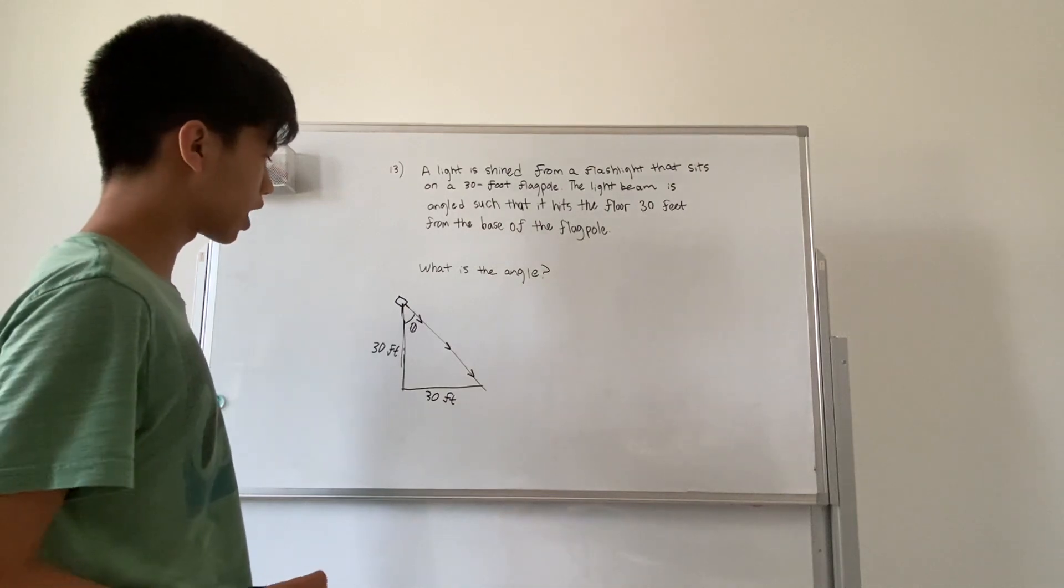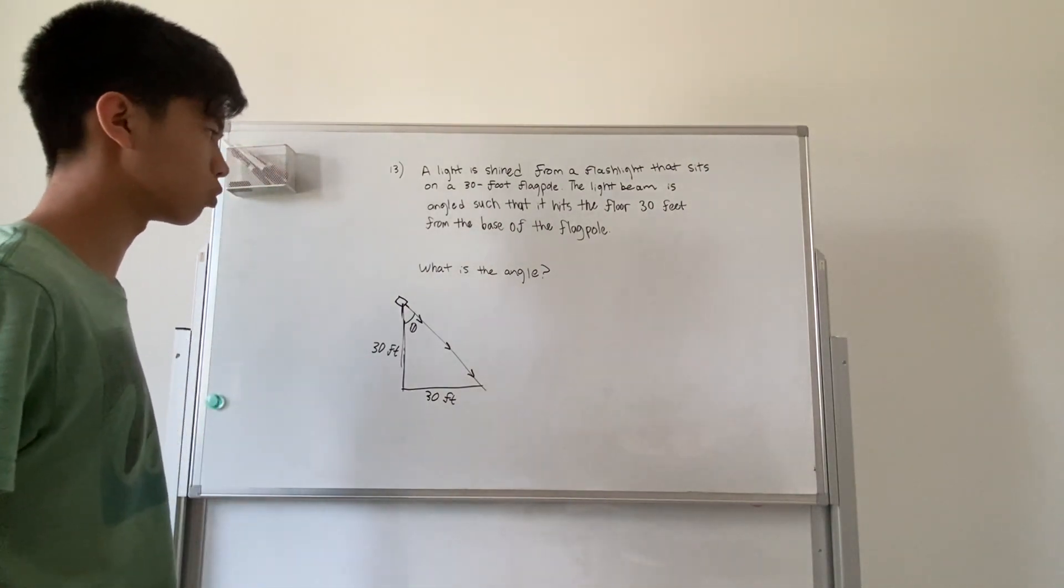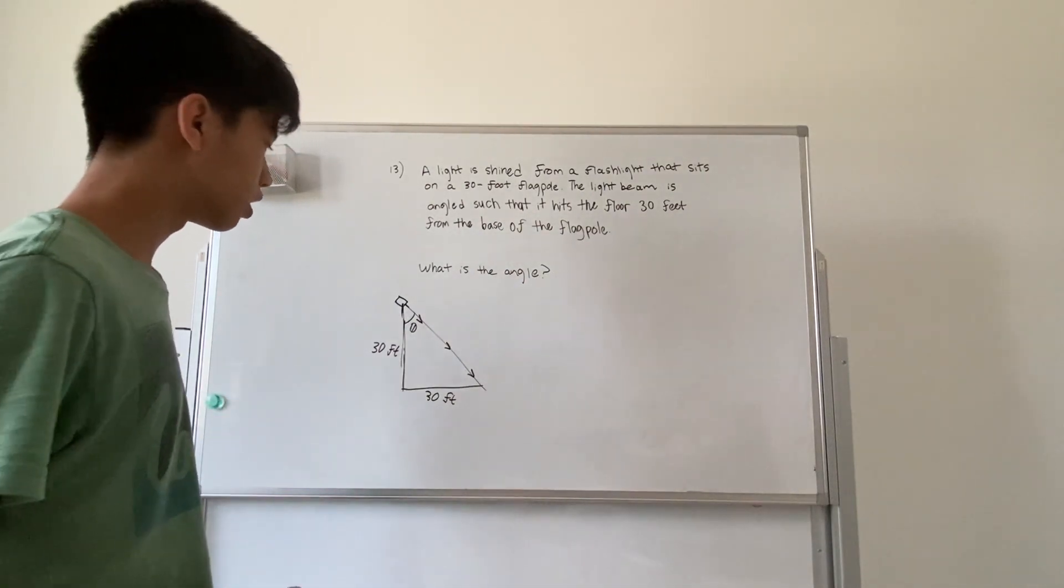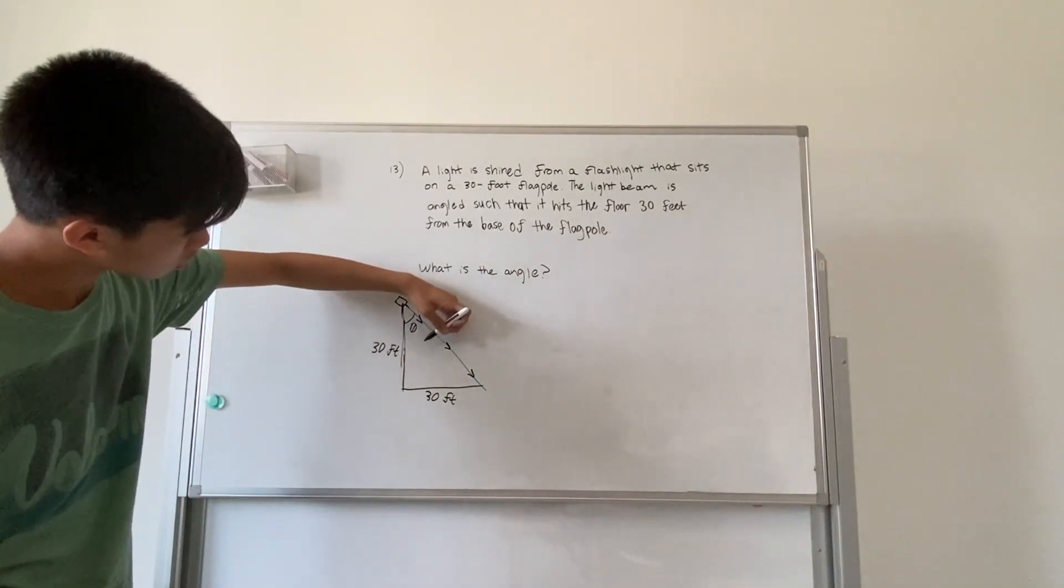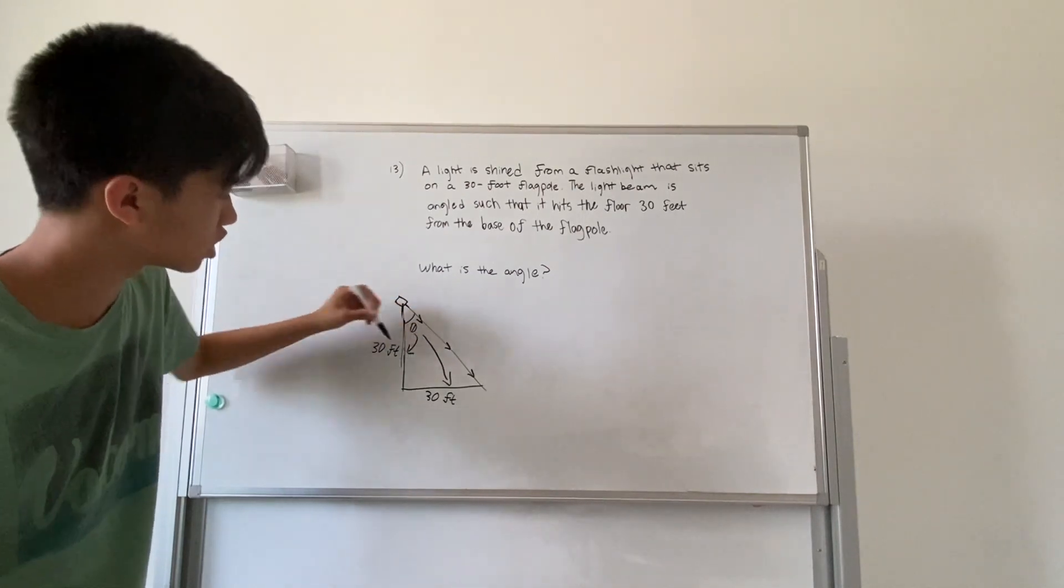Although it doesn't really matter if it's the angle from the vertical or the horizontal, and you'll see why. If you use your trig, we'll find that this is the opposite to the angle and this is adjacent to the angle.